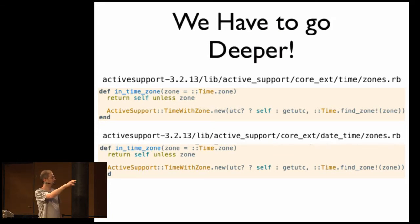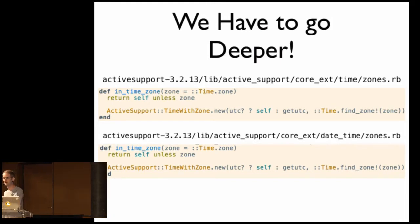It's going to call active support time with zone new. And this UTC question mark method is a method defined in the core library that just simply returns whether or not the offset from UTC is zero, right? So if it was already a UTC defined time or not. If it was, then we're going to call the constructor with self. If not, we're going to call get UTC, which is just a method that converts a time or a date time with a UTC offset into the UTC equivalent with the zero offset.